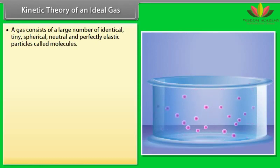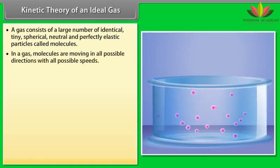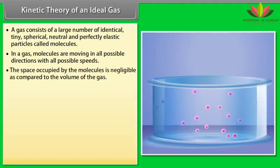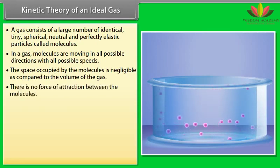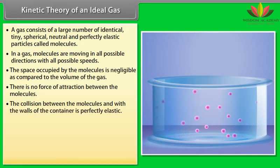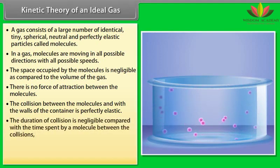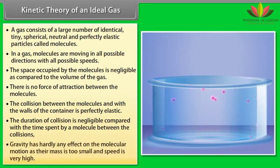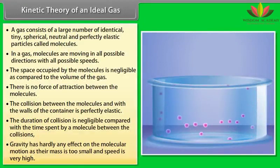Kinetic theory of an ideal gas. A gas consists of a large number of identical, tiny, spherical, neutral and perfectly elastic particles called molecules. In a gas, molecules are moving in all possible directions with all possible speeds. The space occupied by the molecules is negligible as compared to the volume of the gas. There is no force of attraction between the molecules. The collision between the molecules and with the walls of the container is perfectly elastic. The duration of collision is negligible compared with the time spent by a molecule between the collisions. Gravity has hardly any effect on the molecular motion as their mass is too small and speed is very high.